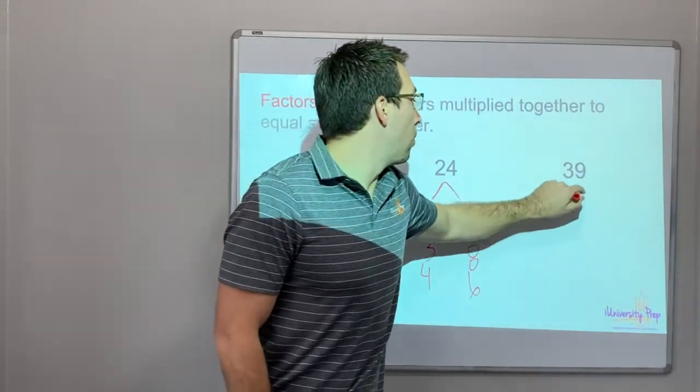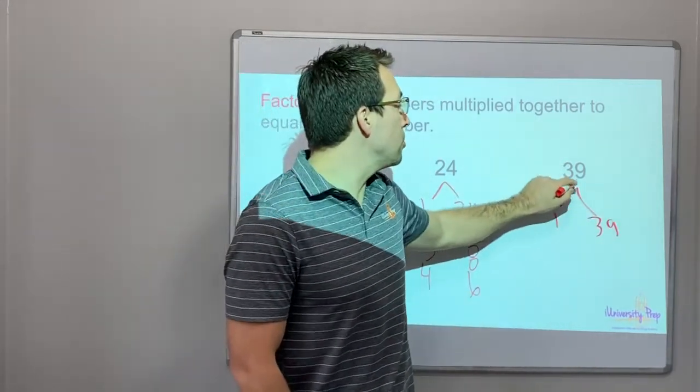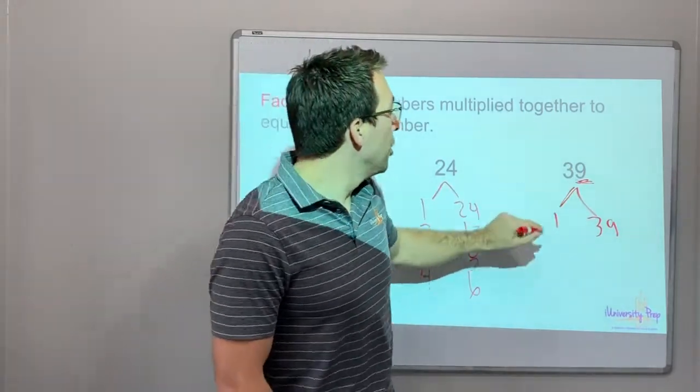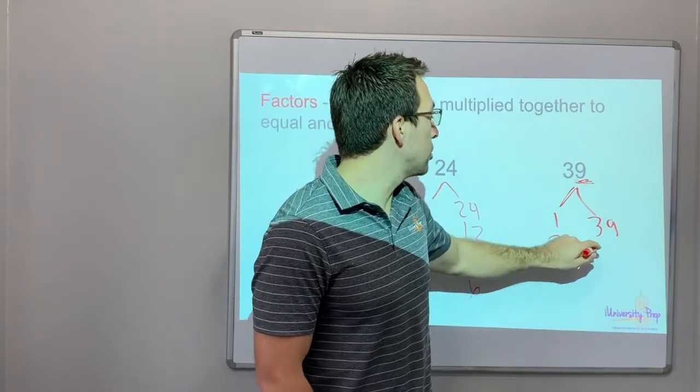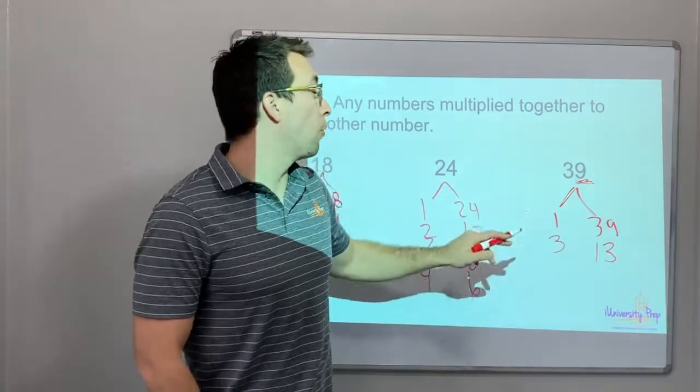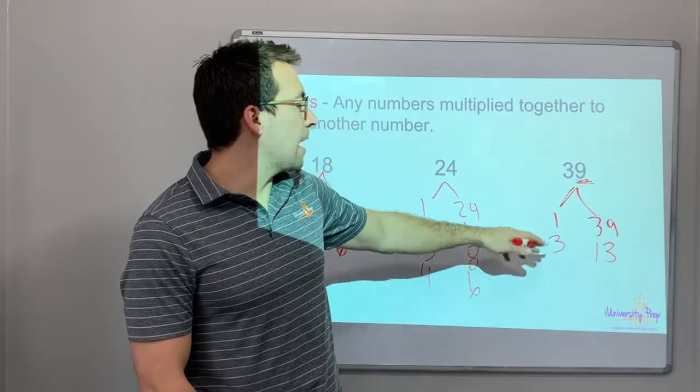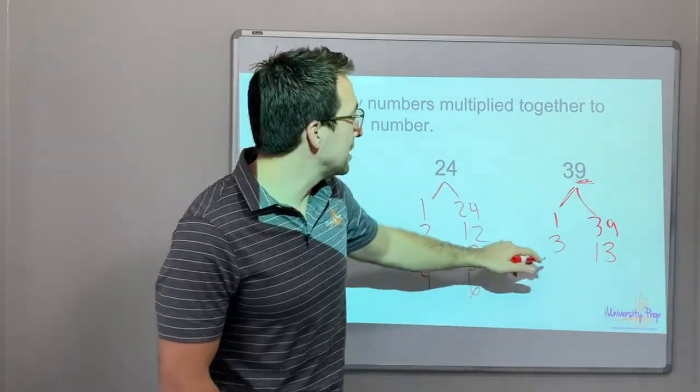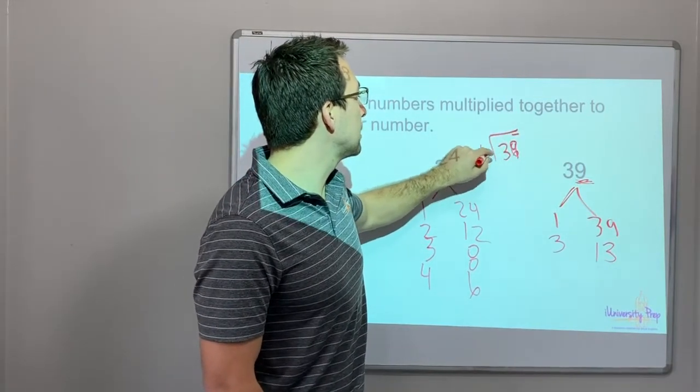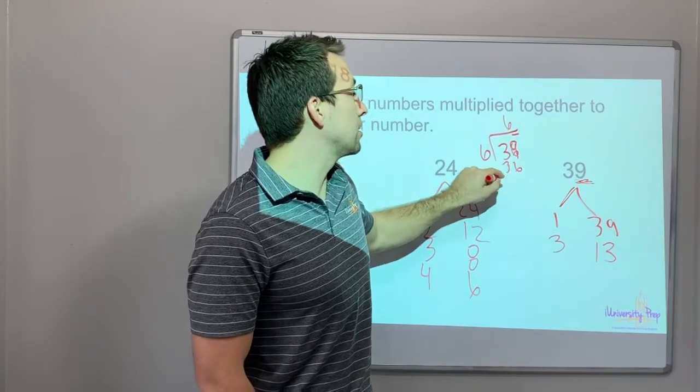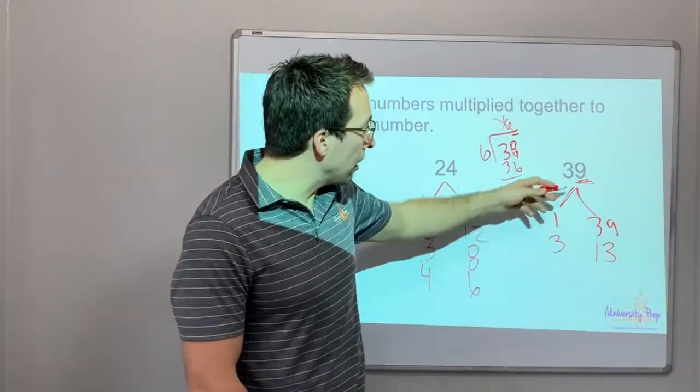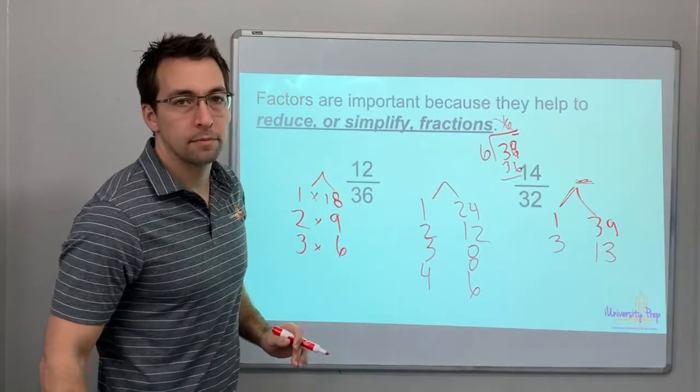39. 1 times 39. Always start with 1. 2 times, nope. Look, this is an odd number, so it's not 2. Not going to be divisible by 2. 3 times, 3 times 1 is 3, 3 times 3 is 9, so 13. What about the number 4? No, because it's odd. So the number 5 is 35, 40, 45? No. 6? What about the number 6? 39 divided by 6. 6 times 6 is 36, so no, that doesn't work. 7? 39 divided by 7? No. So here are our factors for 39.